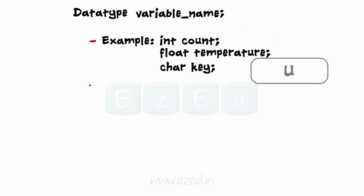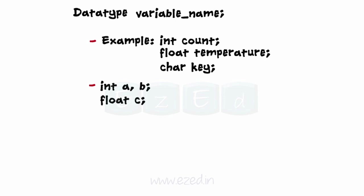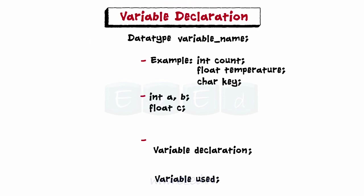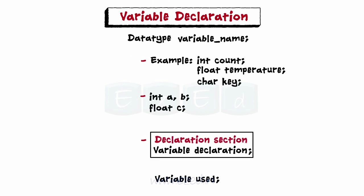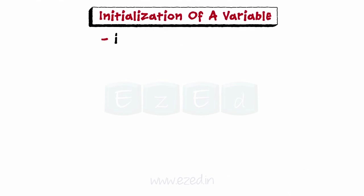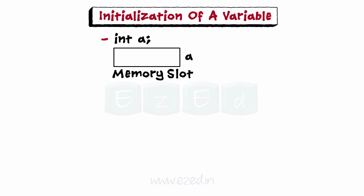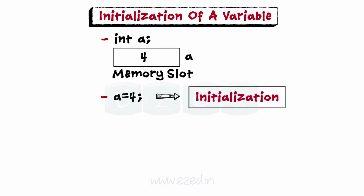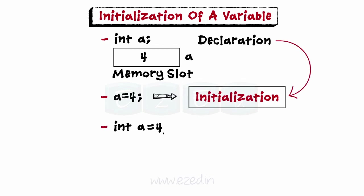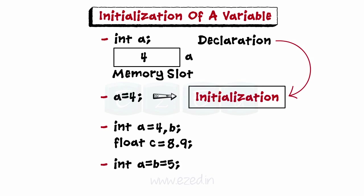We can also declare multiple variables of the same type in one line. Every variable should first be declared in the declaration section in any program and then be used. When a variable is declared, no value is allotted to it. The process of assignment of an initial value is known as initialization. Initialization follows declaration. Variables can also be initialized when they are declared in the same program statement, and two variables having the same value can be initialized in the same line.